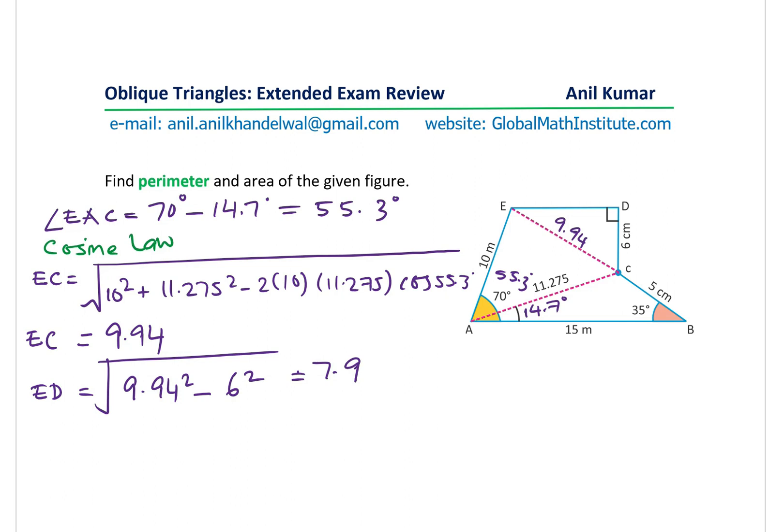Perimeter. So now we can add them all and find the perimeter which was required. So let's add them. We have 15 plus 5 plus 6 plus 7.9 plus 10. So when you add them up, you get how much? Let's add them. We got 15 plus 5 plus 6 plus 7.9 plus 10, and that is 43.9. So that becomes the perimeter for us. So we got the perimeter. So first part has been done.